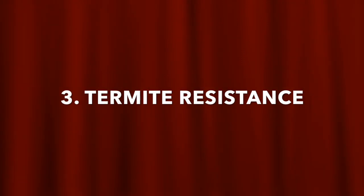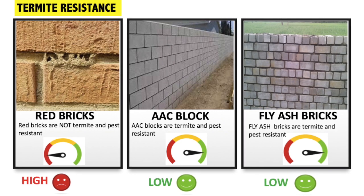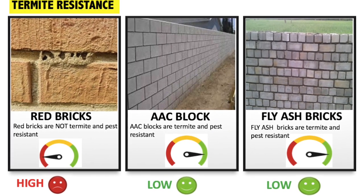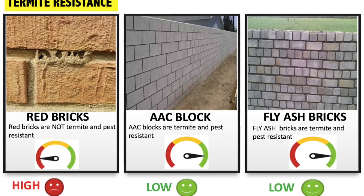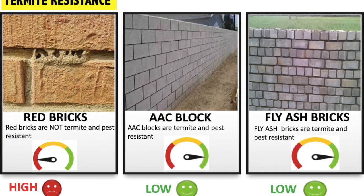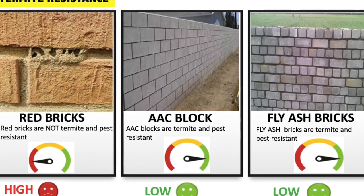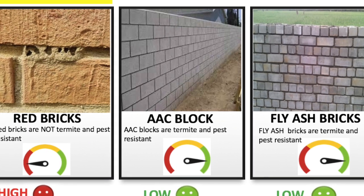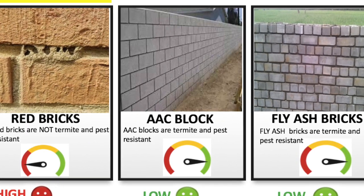Point 3: Termite Resistance. Red bricks are not termite resistant as they are made from clay, which is an organic material. AAC blocks are termite and pest resistant as they are made from inorganic material, hence it increases the life of the wall. Fly ash bricks are also termite and pest resistant as they are made from inorganic materials.